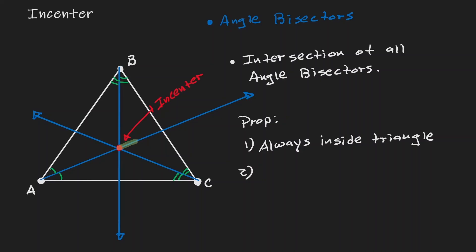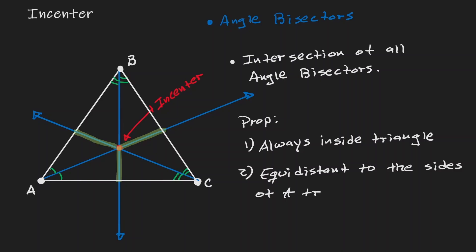This is a point which is equidistant to all the sides of the triangle. So let's assume this is the distance from the point to that side — whatever that distance is, it will be the same on all sides. The incenter is equidistant to the sides of a triangle.